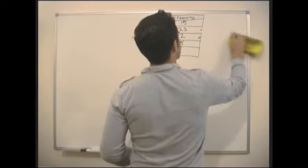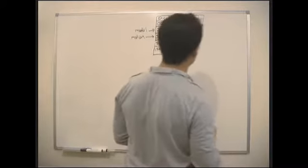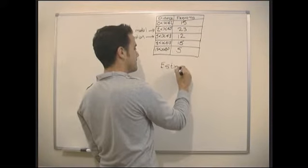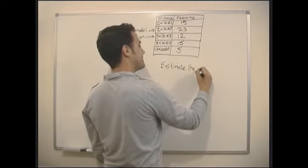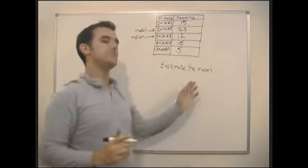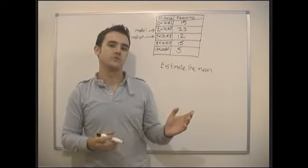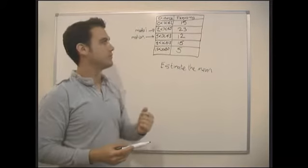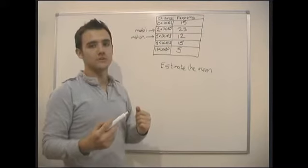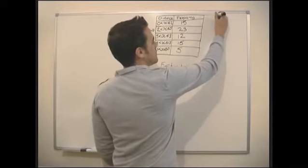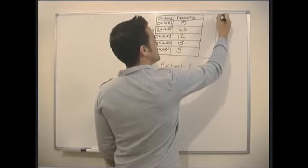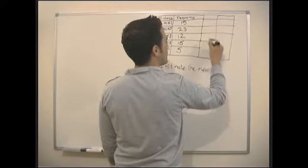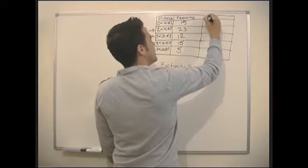So, we're then told in the question that we need to estimate the mean. And remember, for the mean, we have to add up all our results and divide them by however many there are. Now, to do that here, we can't do that because we don't know exactly what the results were. So what we're going to do is we're going to make an estimation. And in order to do an estimation, we're going to have to add on essentially two columns. And this column we're going to call midpoint.